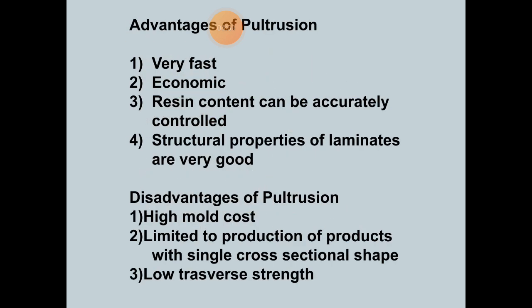There are various advantages of this process. It is a very fast and economical process. Resin contents can be accurately controlled. Structural properties of the laminates are very good. However, there are some disadvantages: high molding cost compared to other processes, limited to production of products with a single cross-sectional shape, and low transfer strength.